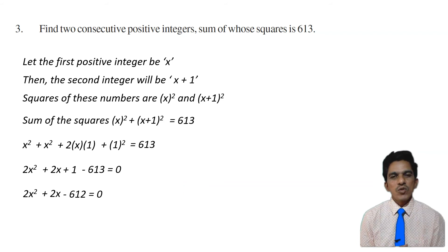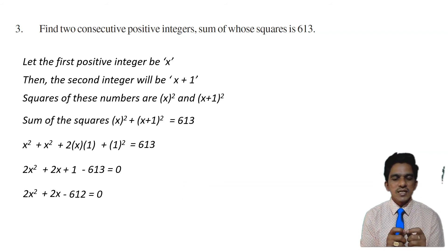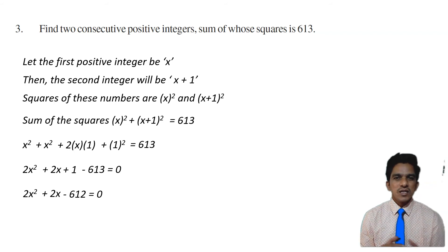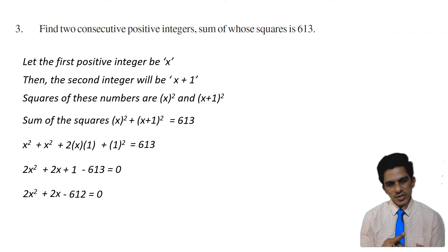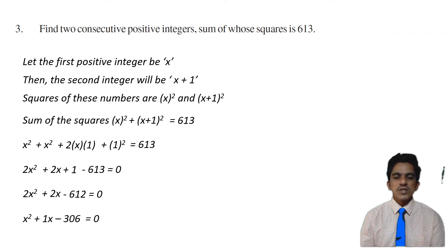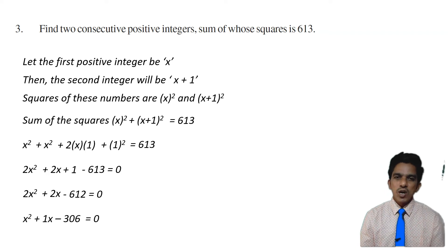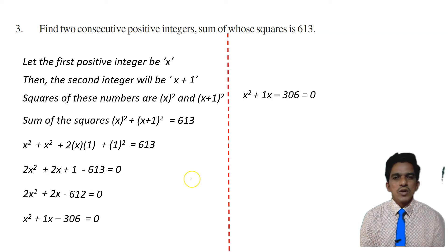We can take out 2 as a common factor from all three terms to eliminate it. Then the equation becomes x squared plus x minus 306 equals 0. So this is the quadratic equation that we have to solve: x squared plus x minus 306 equals 0.